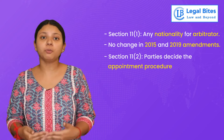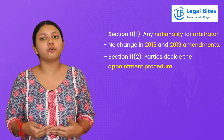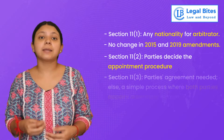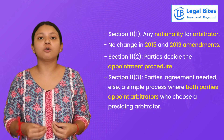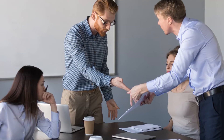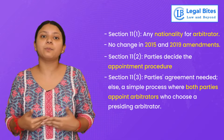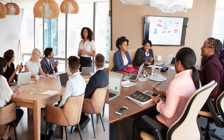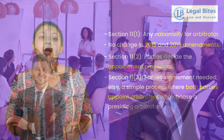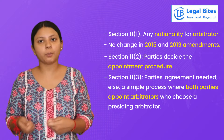Subsection 2 provides that parties are free to determine the procedure for appointment of arbitrators. Subsection 3 goes on to state that if there is no agreement between the parties determining such procedure, then a simple procedure can be followed: the two parties will each appoint one arbitrator, and those appointed arbitrators will appoint one presiding arbitrator.